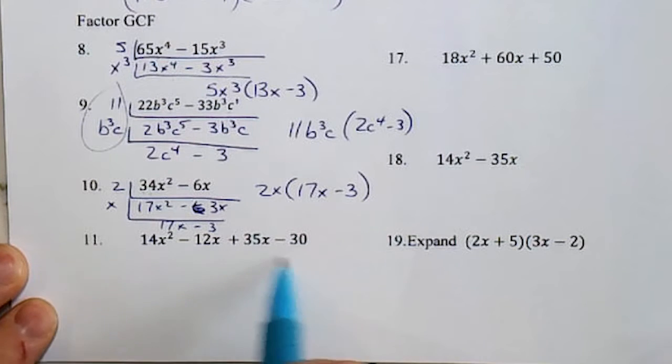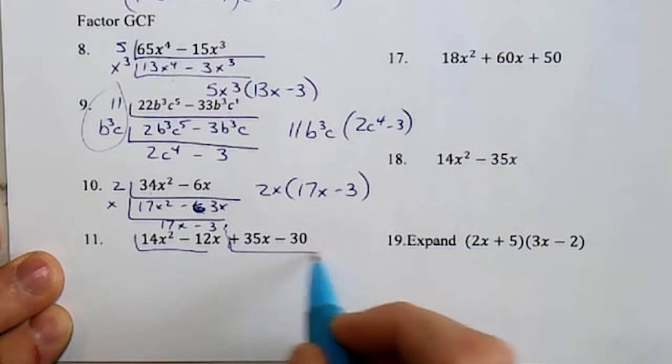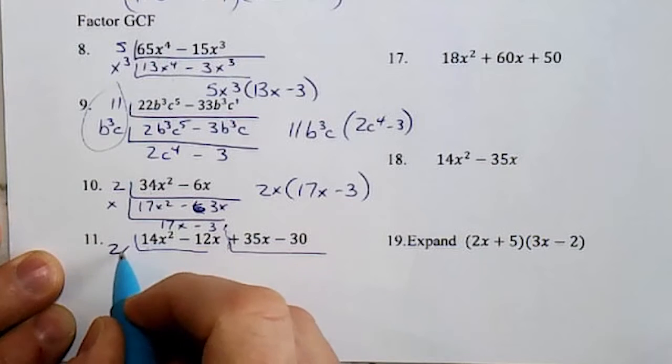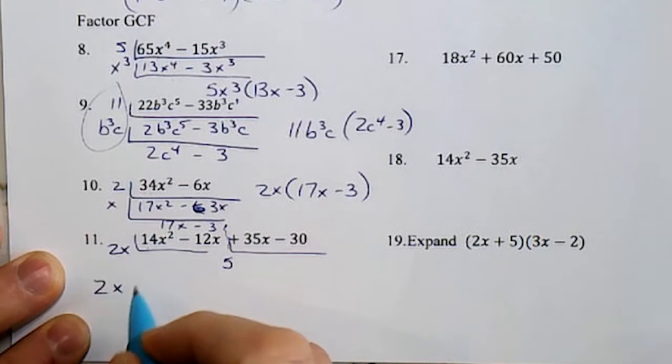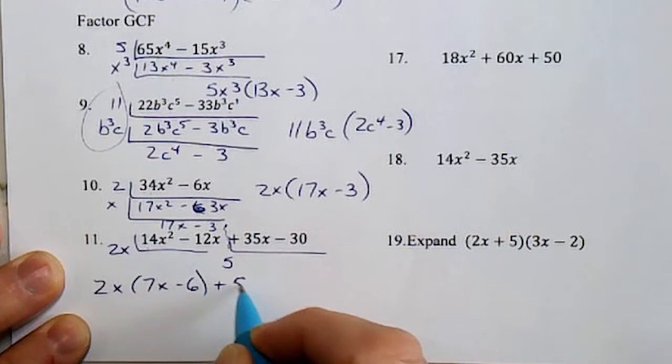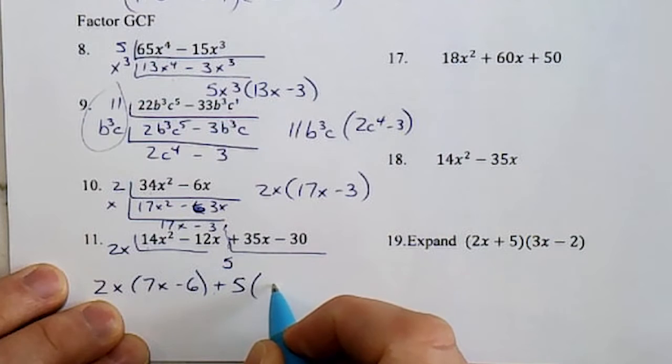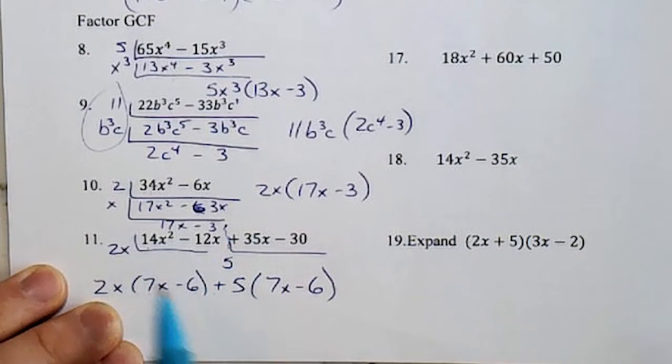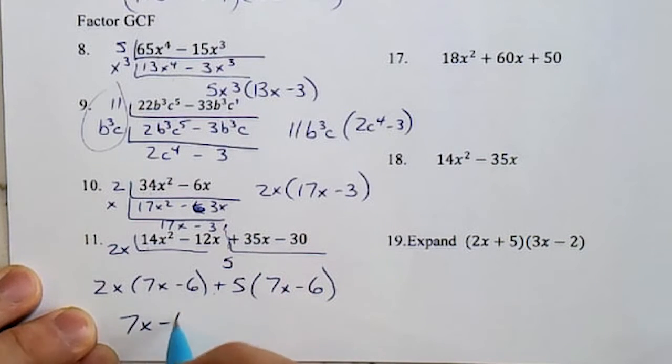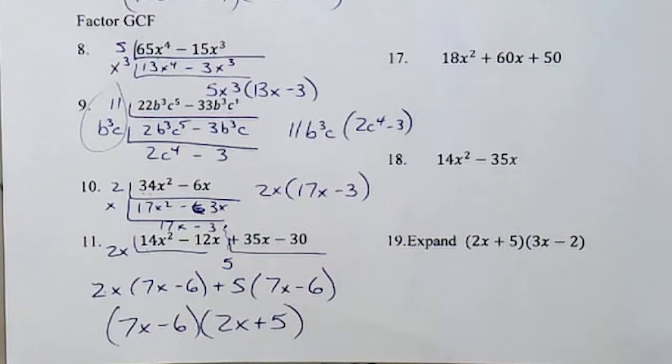And then this one, it's got 4 terms, so this is one of the ones we're going to split in half and GCF both sides. This is 14x, 12x. This side, 5 goes into both. Don't forget this 5 has an invisible plus sign. And I'm taking this divided by 2x is 7x, this divided by 2x, minus 6. If you've done it right, you should have matching binomials. And the leftover piece is 2x plus 5, and I'm done.